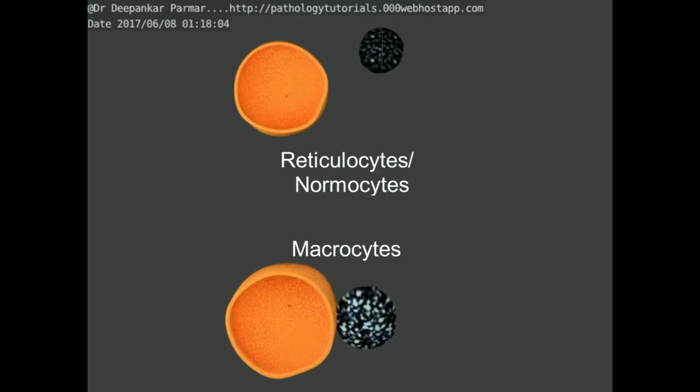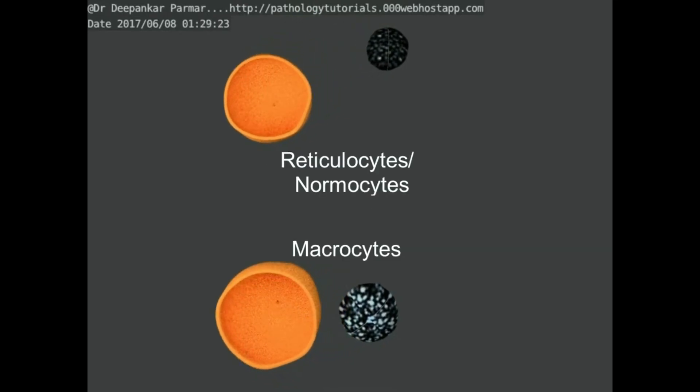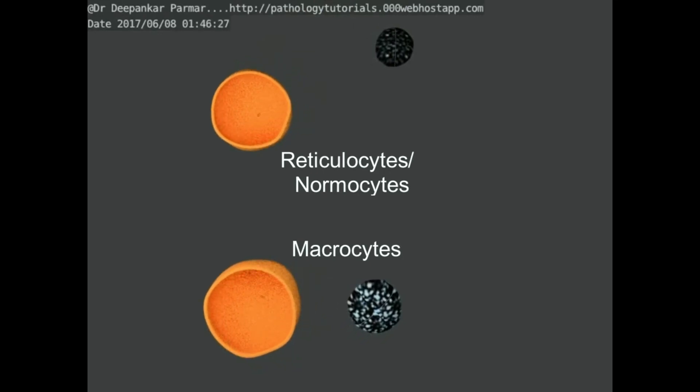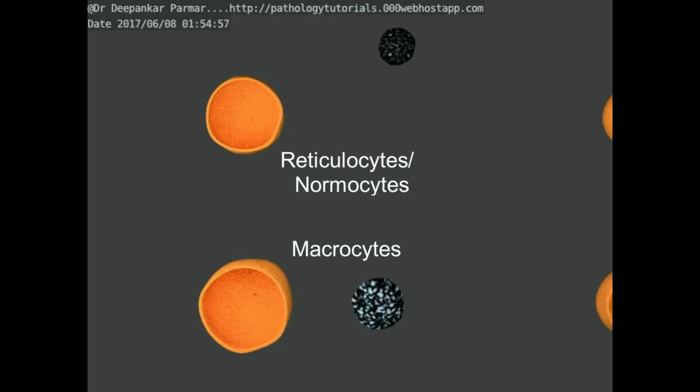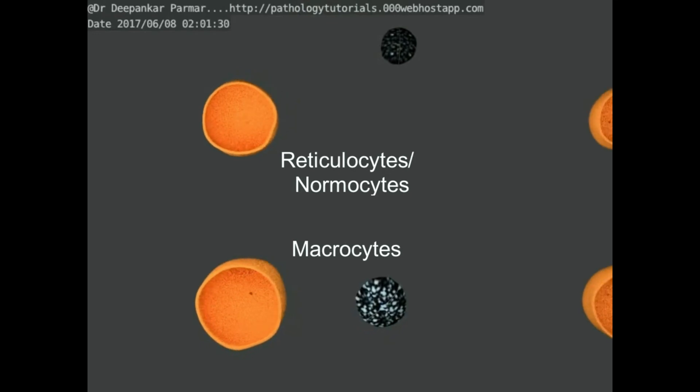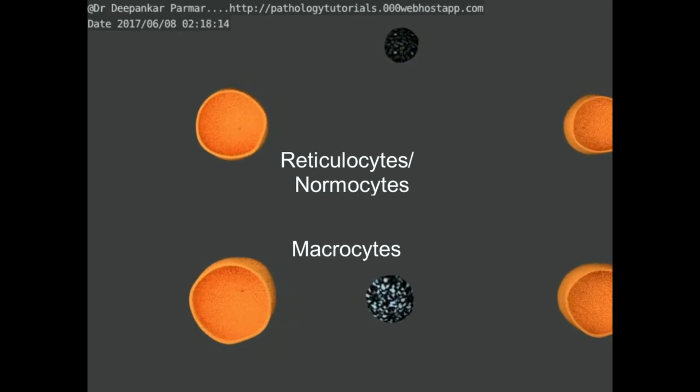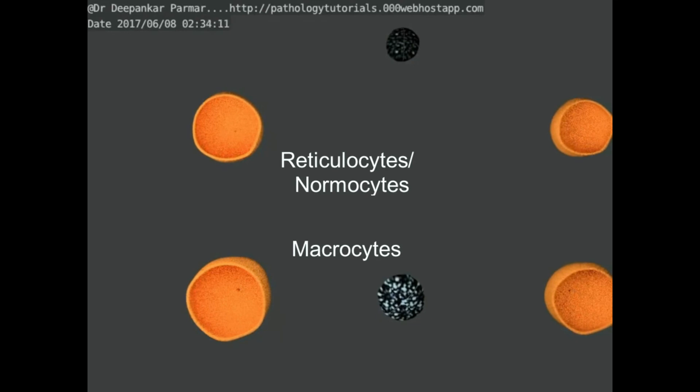Now, you see the enucleated stage of red cells that is a reticulocyte and a matured red cell. In megaloblastic anemia, the corresponding cells are larger in size called macrocytes or macroovalocytes. Macrocytes are enlarged RBCs with mean corpuscular volume MCV larger than 100 FL.